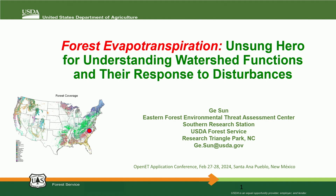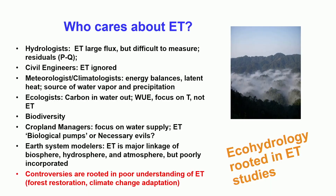My talk is really a lot of random thoughts about why we care about evapotranspiration in the forest community. ET means different things for different people. For ecologists, ET is very important even for biodiversity. For cropland, you care about irrigation. For hydrologists — I'm a hydrologist — ET is a necessary evil because it's a major component of the hydrologic cycle.